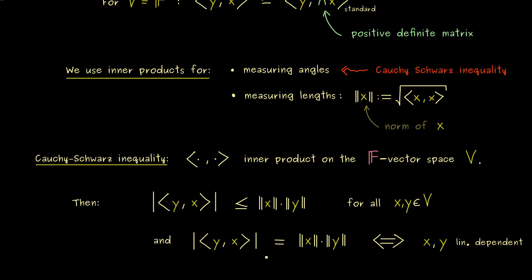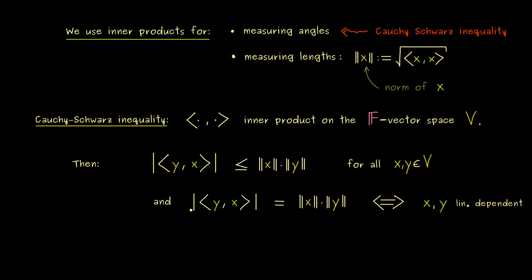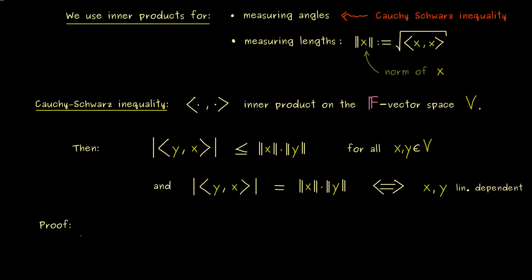Hence, with this statement you can already see why an inner product can measure angles because this is definitely the angle of 0 or 180 degrees. And if you want, you can use the Cauchy-Schwarz inequality here to define the angle between x and y. Okay, but before we do that, we should first talk about the proof of Cauchy-Schwarz. And there I can tell you, in my functional analysis series, you can already find a proof of this statement. For this reason, I want to show you an alternative proof in this video here.